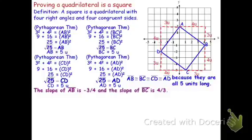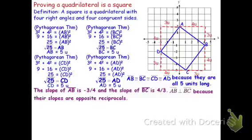Beginning with segments AB and BC, those segments form angle B. The slope of AB is negative three-fourths, while the slope of BC is four-thirds. Because those slopes are opposite reciprocals, AB is perpendicular to BC. If those two segments are perpendicular, then the angle they form has a measure of 90 degrees. Segments AB and BC form angle B, therefore the measure of angle B is 90 degrees.